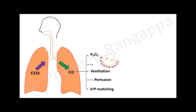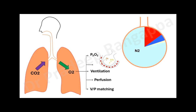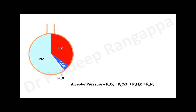When we take air in, it is not pure oxygen — it is air with different components. At the alveolar level, the largest component of alveolar pressure is nitrogen, then oxygen, then carbon dioxide, and finally water vapor. So alveolar pressure is determined by the combination of alveolar oxygen, alveolar carbon dioxide, water vapor pressure, and alveolar nitrogen.